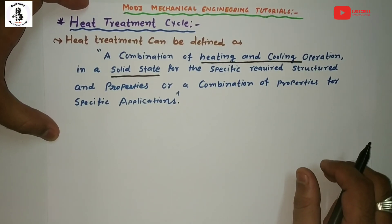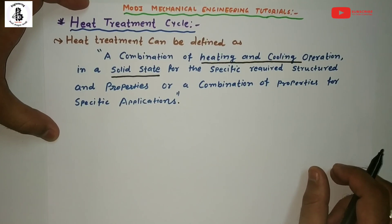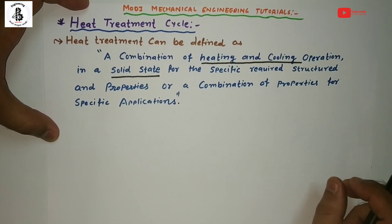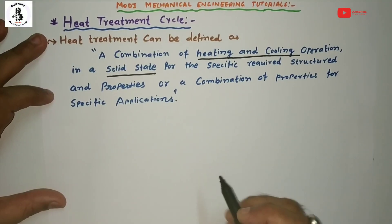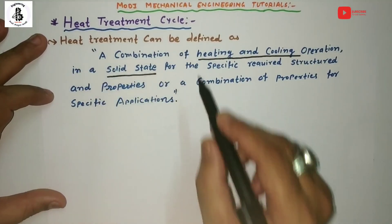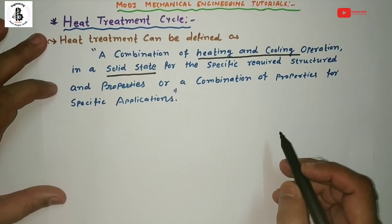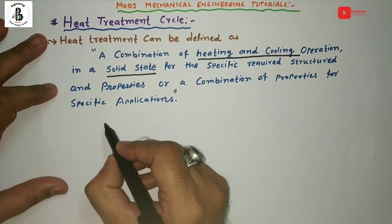Austenite, subjected to different cooling rates, will convert into different phases, and each different phase will have different properties. Let's look at the basic heat treatment cycle for better understanding of the various stages of the heat treatment process, represented on a graph.